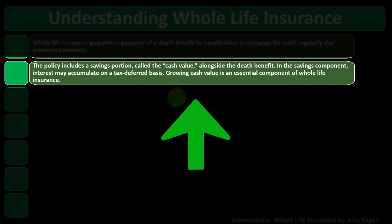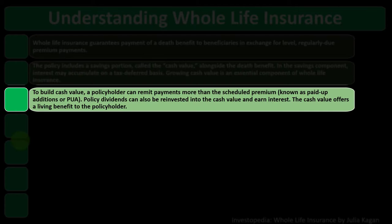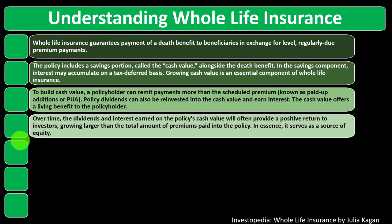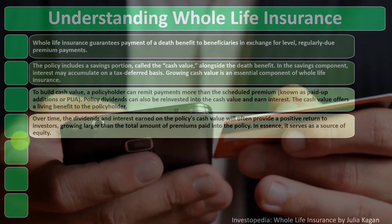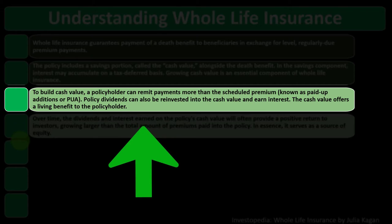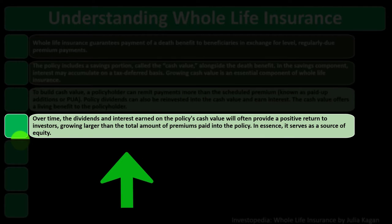Growing cash value is an essential component of whole life insurance. To build cash value, a policyholder can remit payments more than the scheduled premium, known as paid-up additions or PUA. Policy dividends can also be reinvested into the cash value and earn interest. The cash value offers a living benefit to the policyholder — unlike pure term life insurance, where there's no investment component and no living benefit. Over time, dividends and interest earned on the policy's cash value will often provide a positive return, growing larger than the total premiums paid. In essence, it serves as a source of equity.